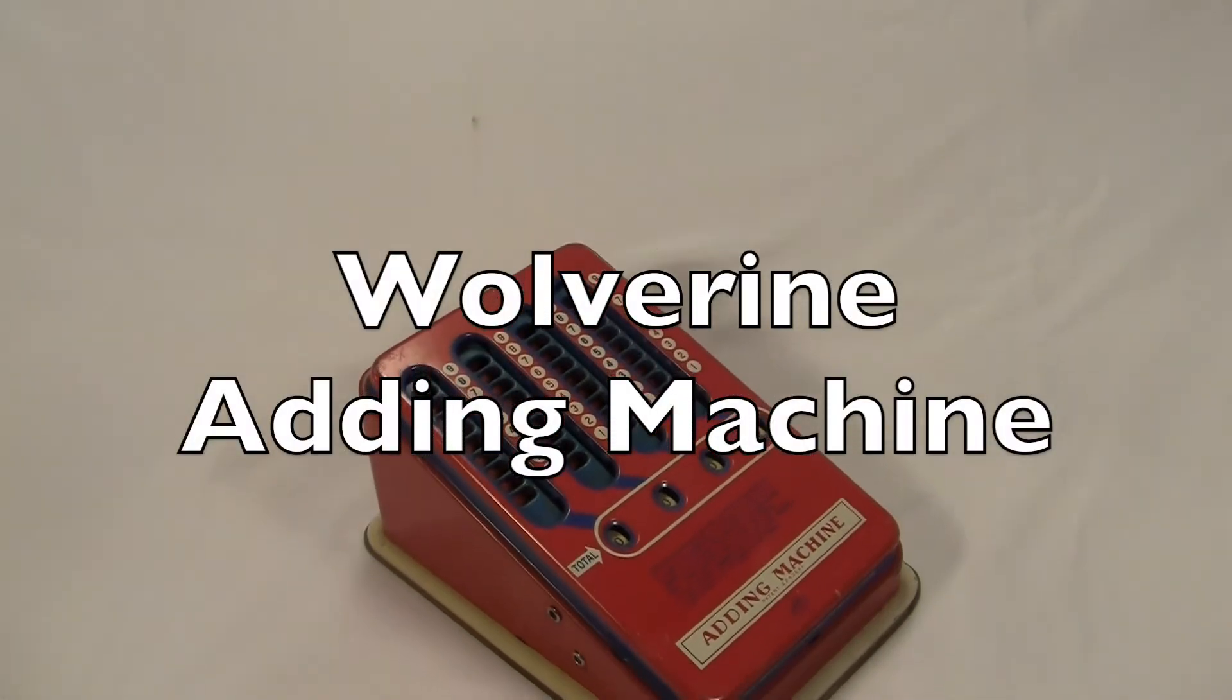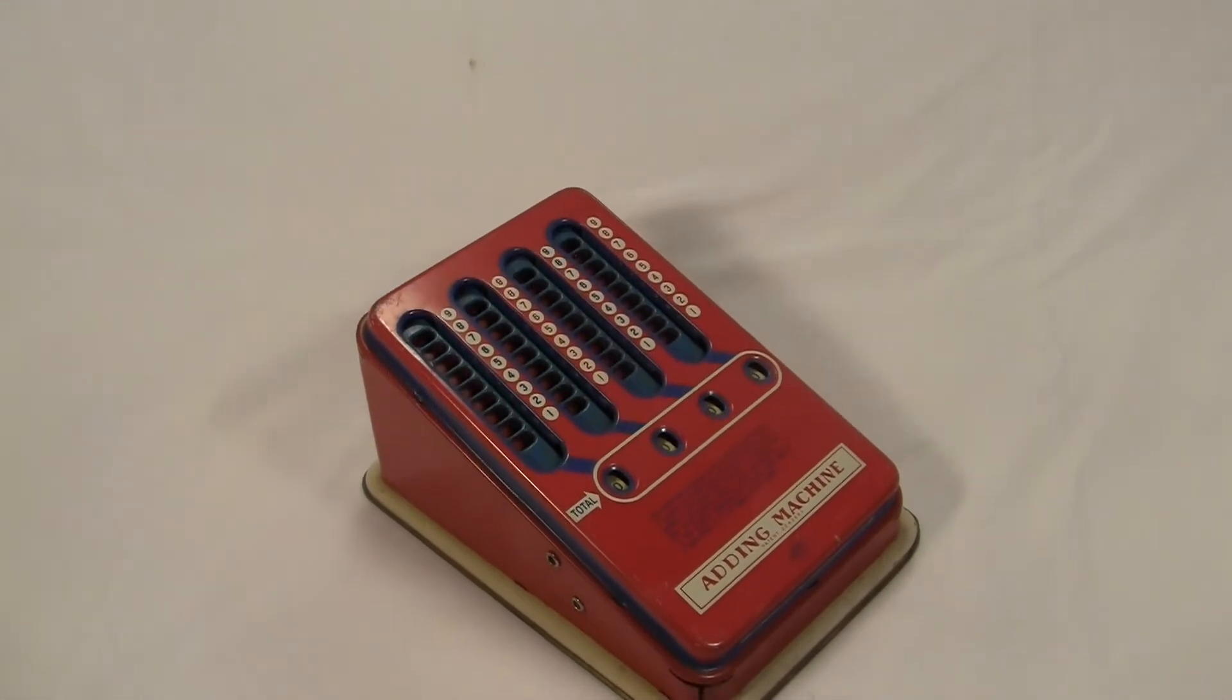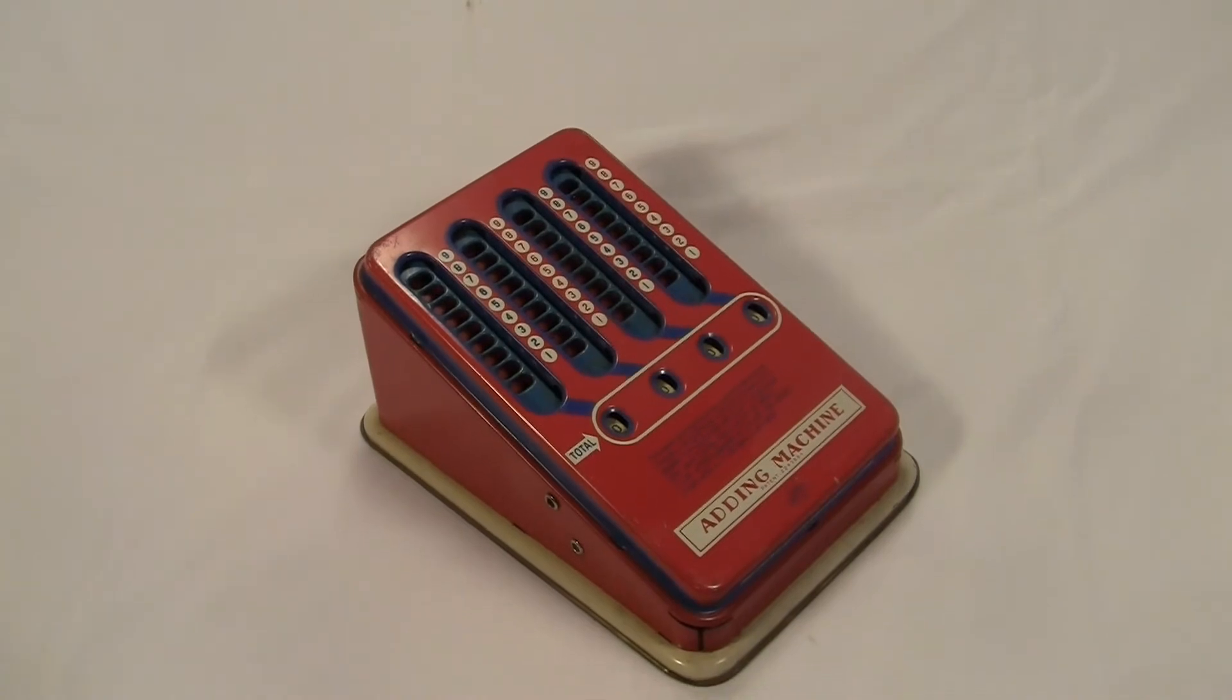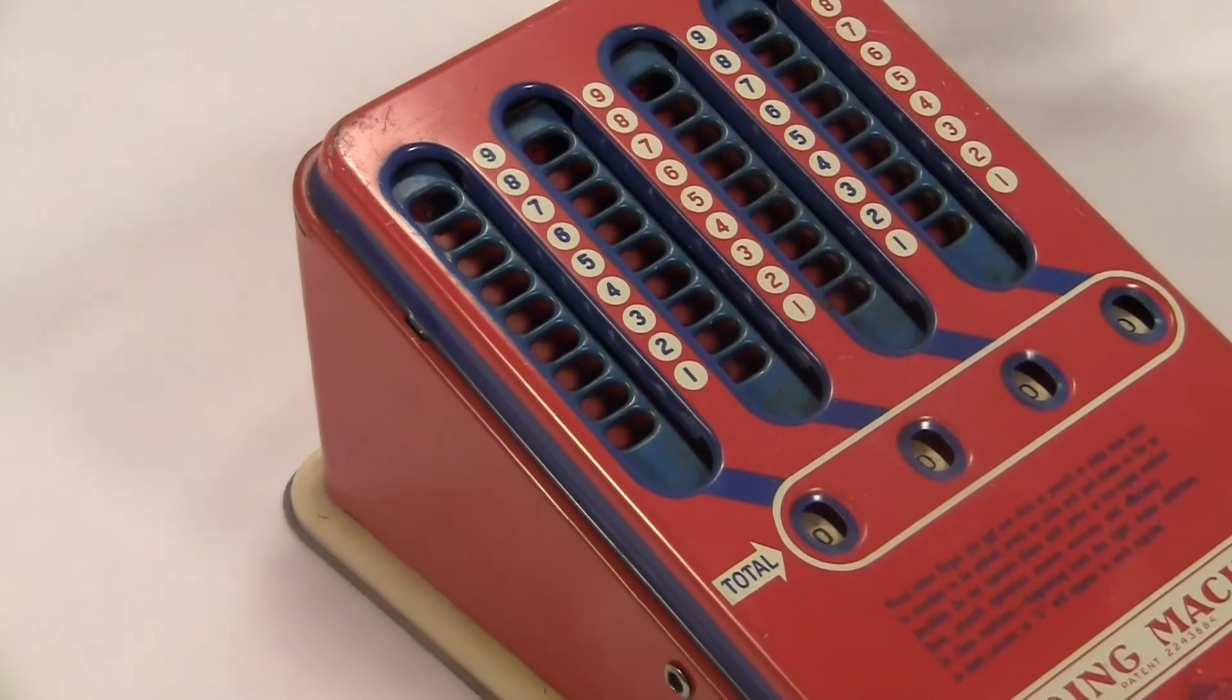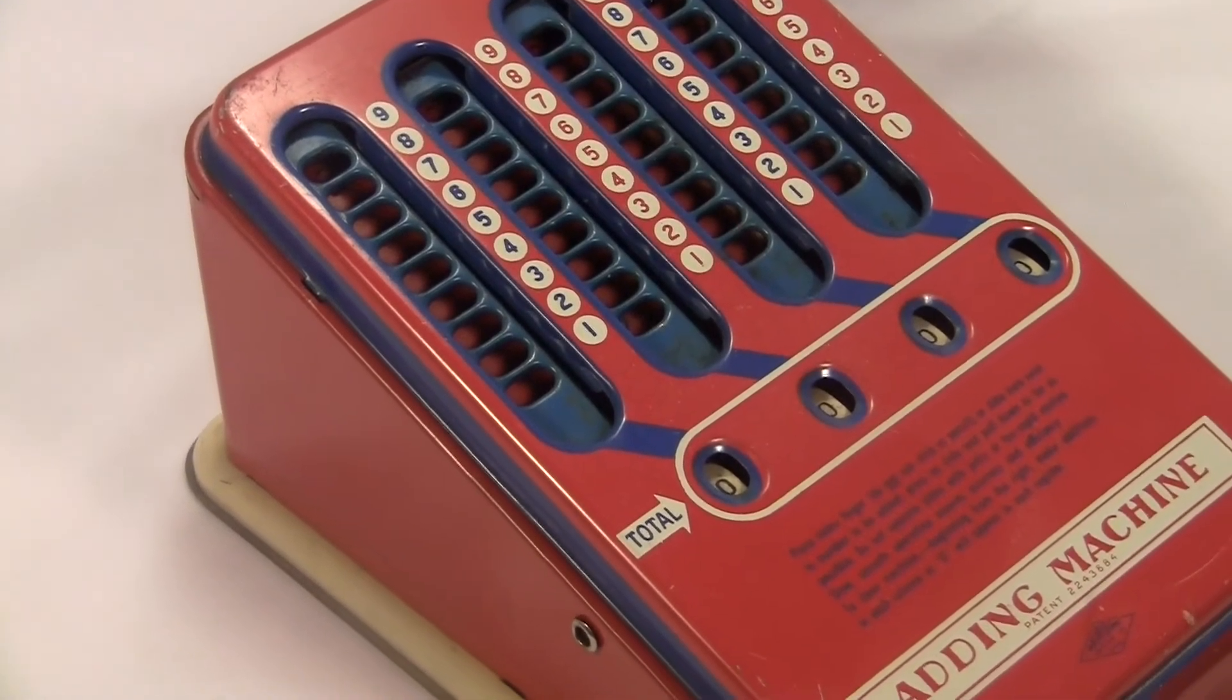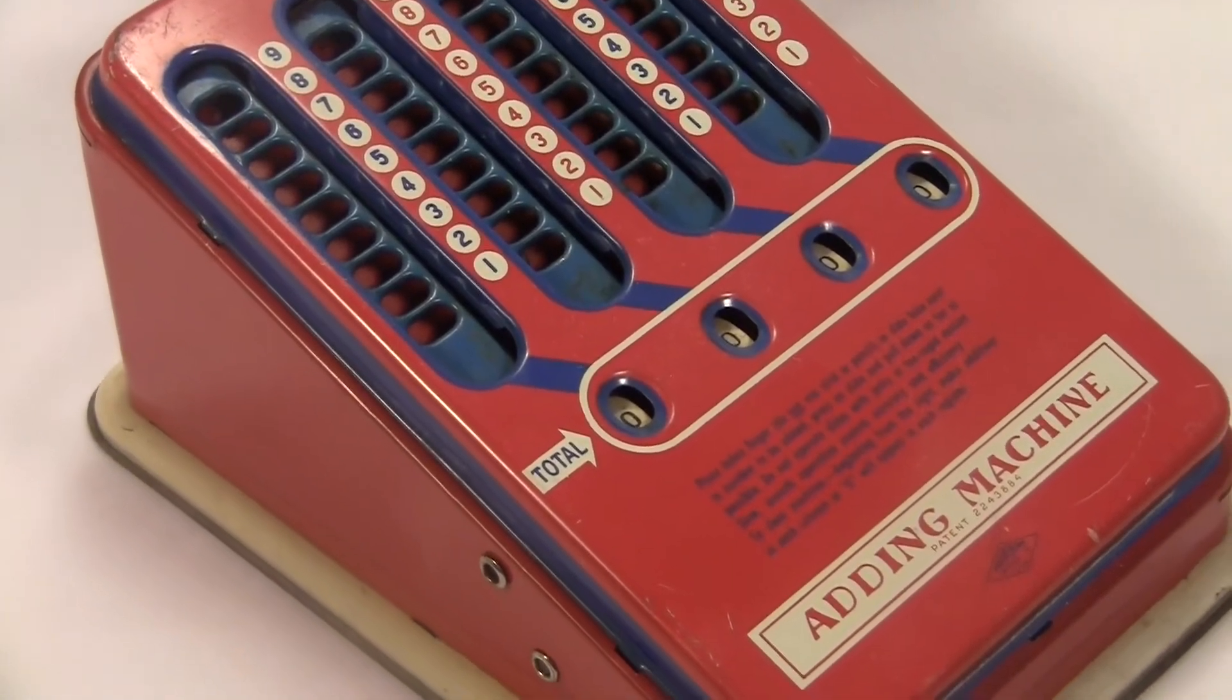This is the Wolverine Adding Machine, probably from the 1940s. You know, for the kids. It's really loud. It's a big red tin box that can add numbers with four digits.